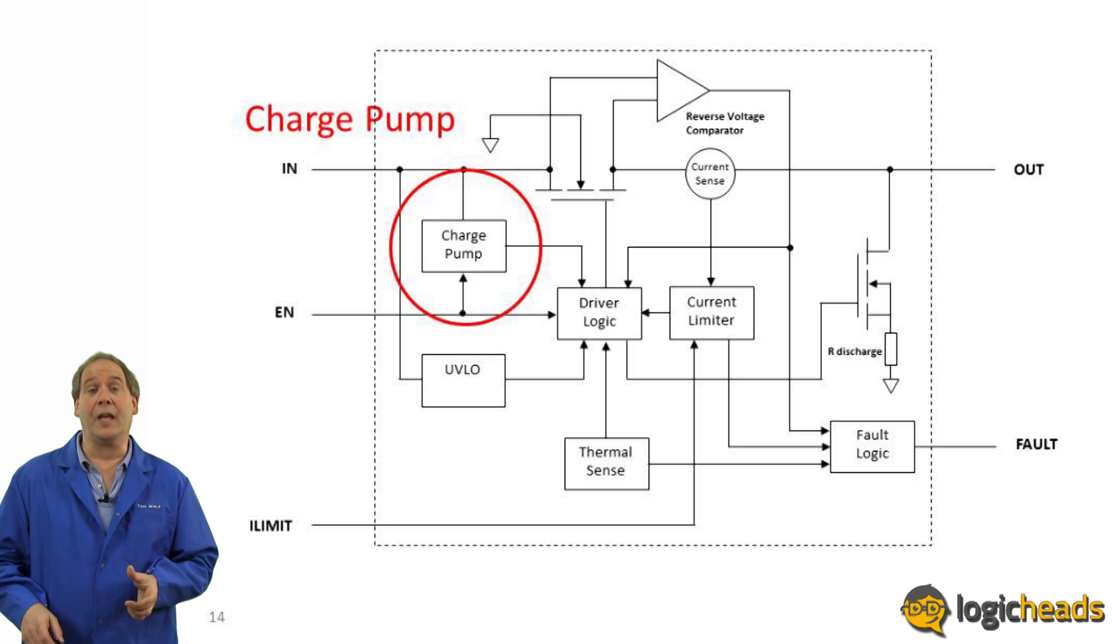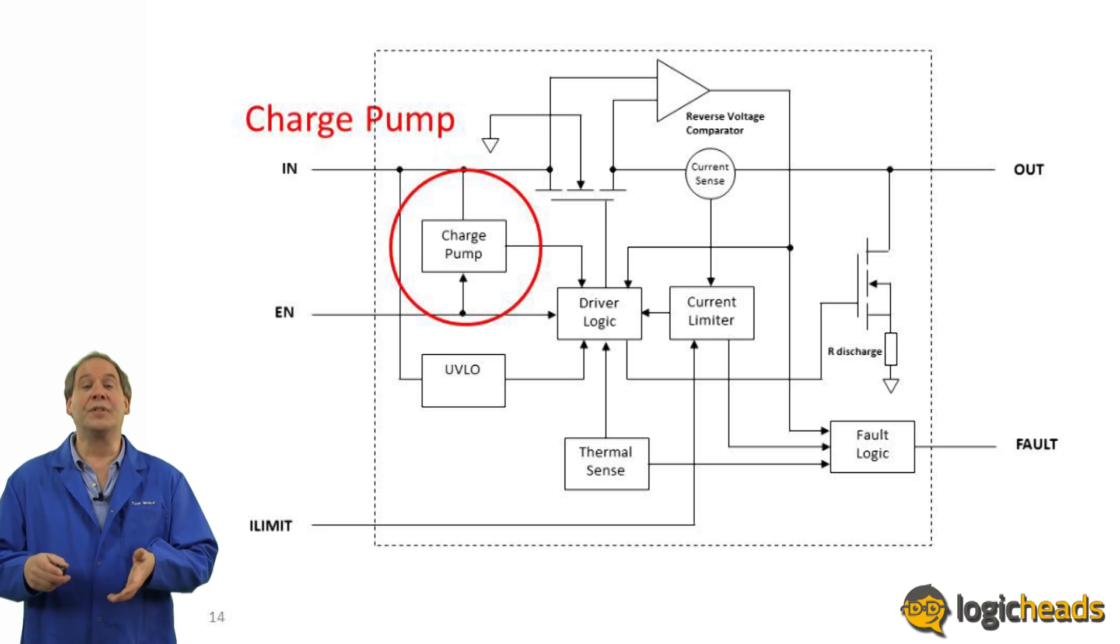FETs can get a bit finicky at very low voltages. Without enough voltage on the gate they just don't turn off or on reliably. Many applications in mobile phones, for example, need to operate at only a few volts right near the lower limit of the FET operating. So to make the load switch work reliably at this low voltage, a charge pump can be added to boost the gate voltage internally to the proper levels.